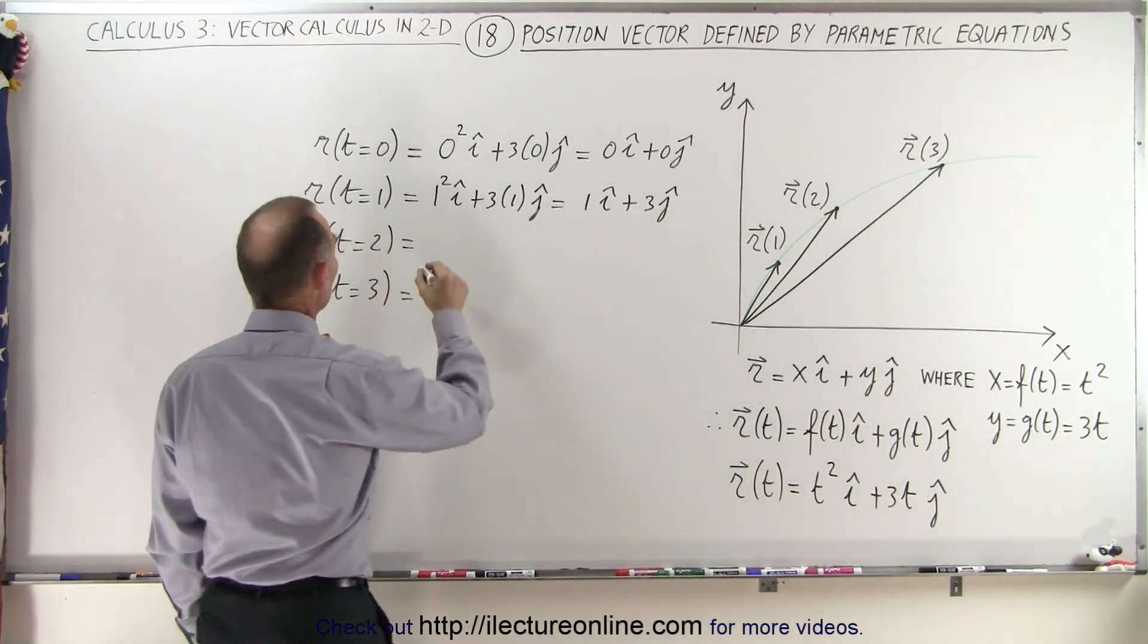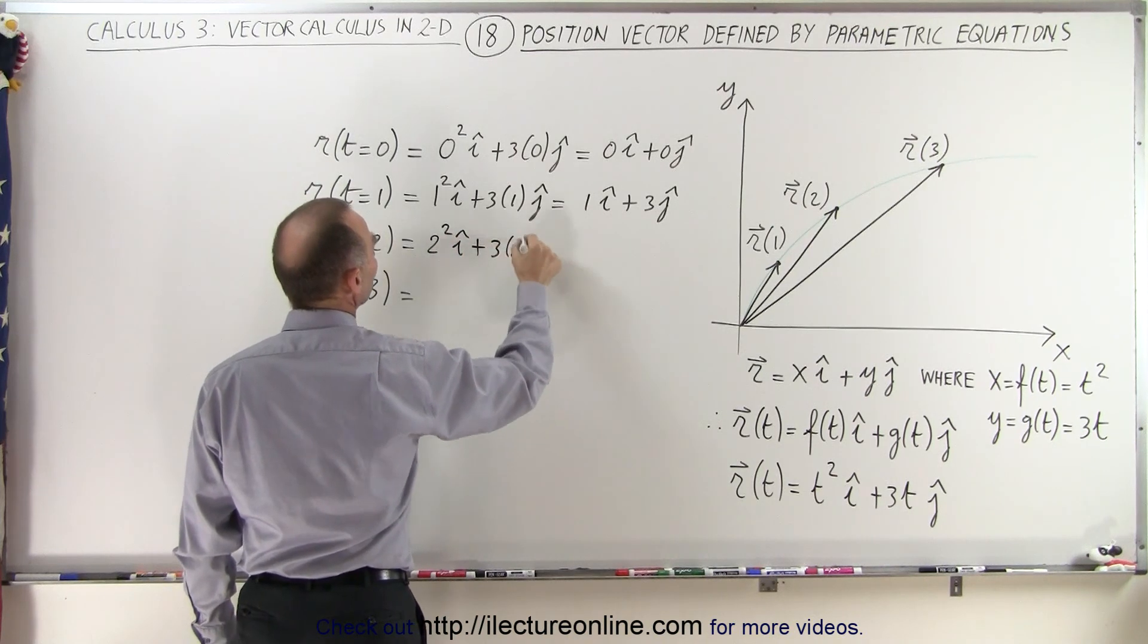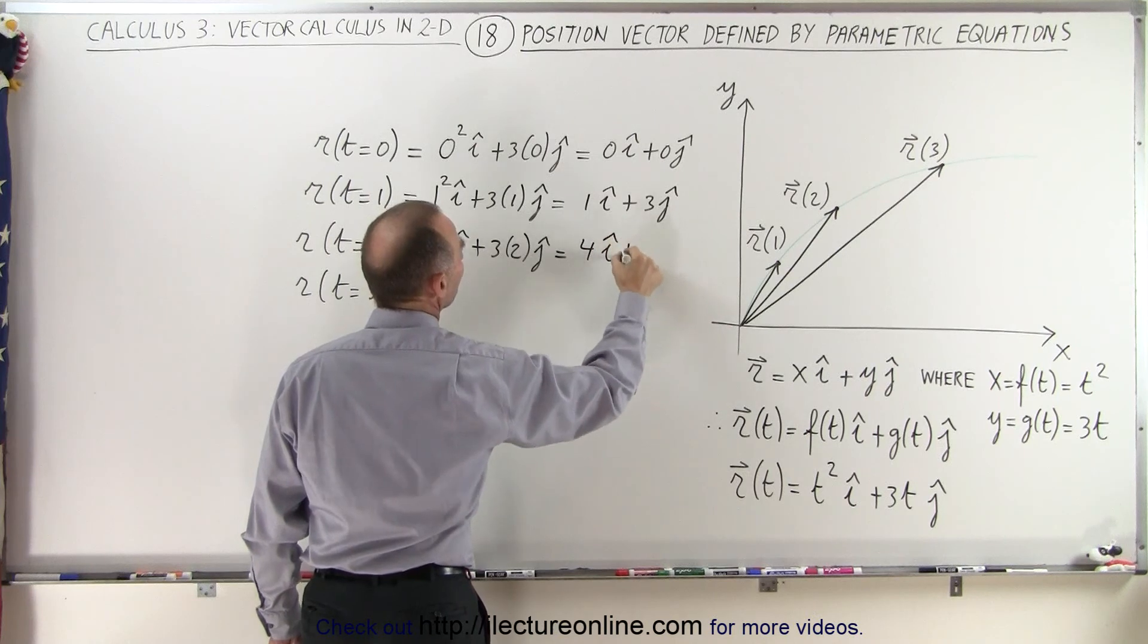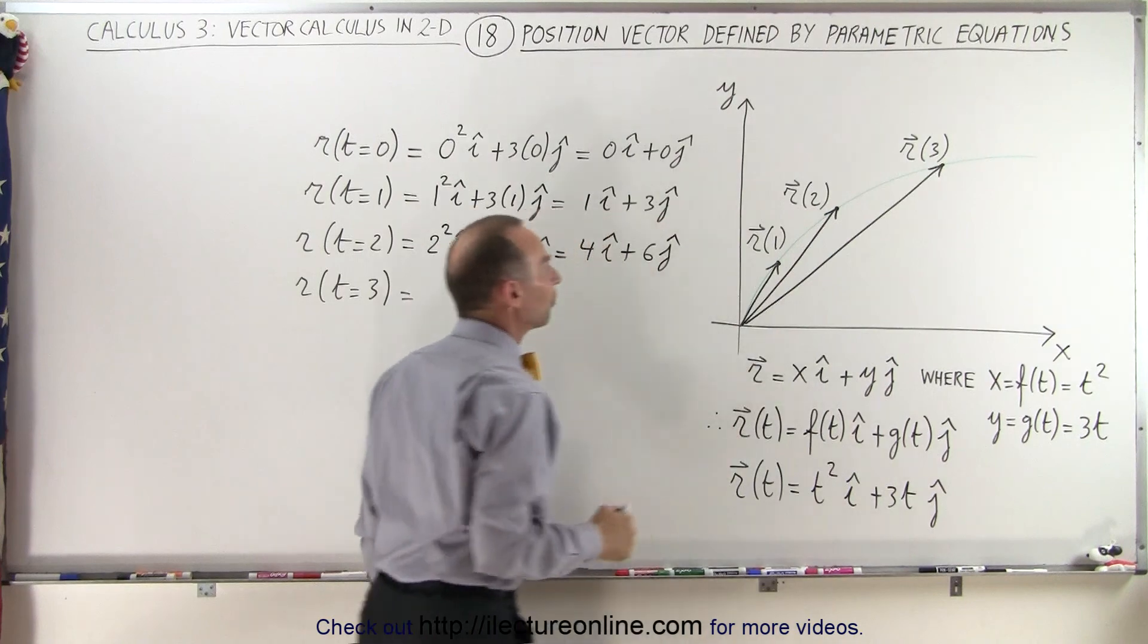When time equals 2, we get 2 squared in the i direction plus 3 times 2 in the j direction, which is 4i plus 6j. So now you can see at time equals 2, our particle is in this position.